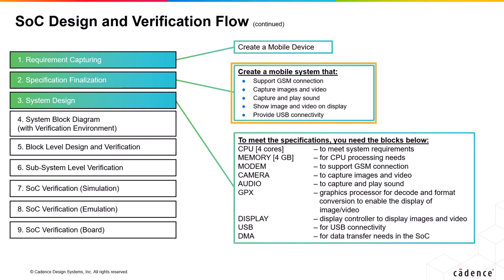The next step is specification finalization, where the product specs are finalized based on multiple interactions with customers and many iterations. For a mobile example, specs with several requirements are mentioned: first, to support GSM connection; second, to capture images and video; third, to capture and play sound; fourth, to show images and videos on display; and fifth, to provide USB connectivity.